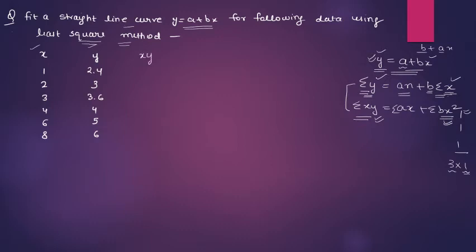First of all you can find xy. 2.4 times 1 is 2.4, 3 times 2 is 6, 3.6, 10.8, then 4 times 4 is 16, 6 times 5 is 30, 8 times 6 is 48. Now you also need x square. 1 square is 1, 2 square is 4, 3 square is 9, 4 square is 16, 5 square is 25, 6 square is 36, 8 square is 64.